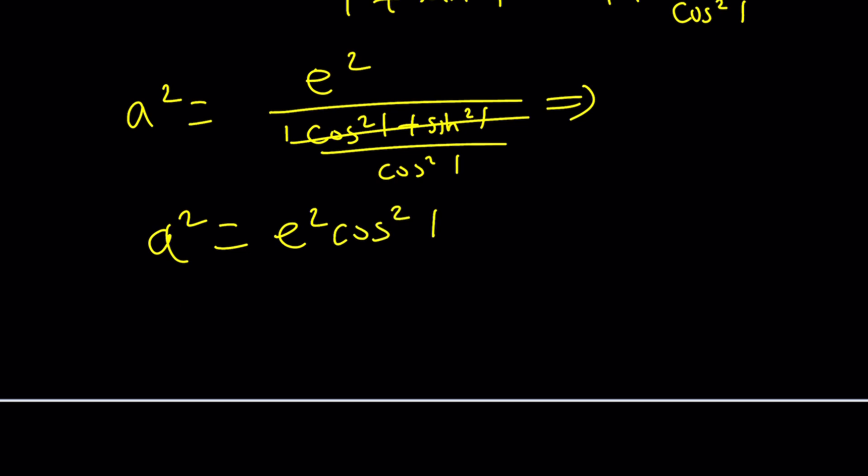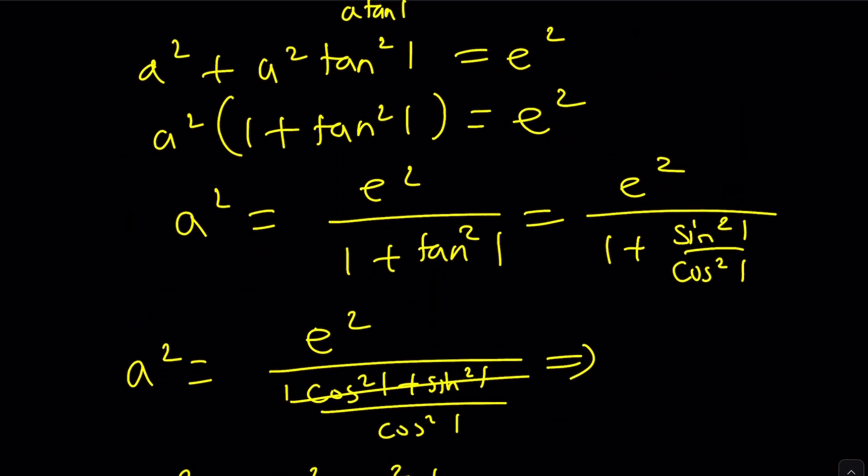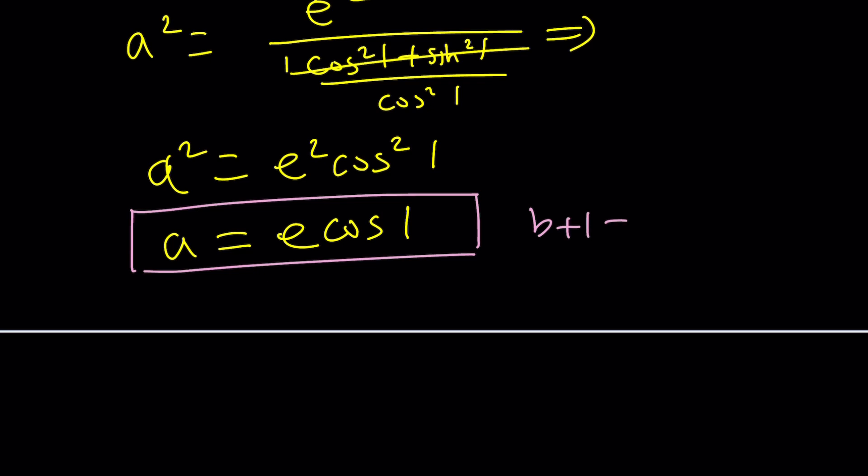So this becomes a squared equals E squared divided by 1 over cosine squared, so I'm just going to write it as E squared cosine squared 1. I know a squared, so I can find a by square rooting both sides. This is my a. And b plus 1 is a times tangent 1. So b plus 1 is just going to be this times tangent 1, which I can write as sine 1 over cosine 1. Cancel that out, and b becomes E sine 1 minus 1. I got the answer.